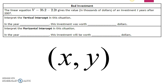The linear equation V equals 35.2 minus 2.2t gives us the value in thousands of dollars of an investment t years after 2007. And you can see we have to find the vertical intercept and the horizontal intercept.